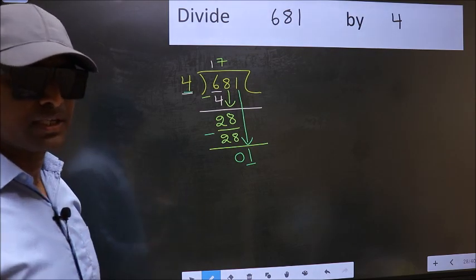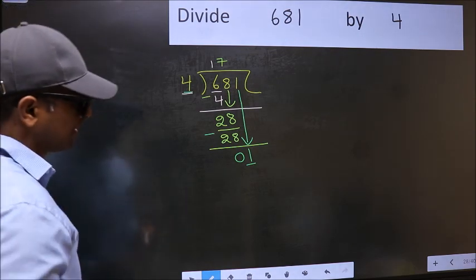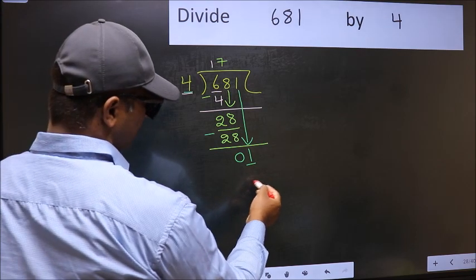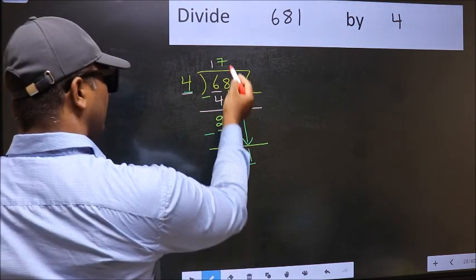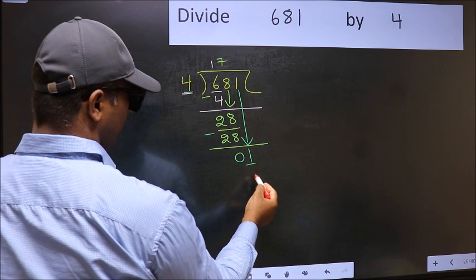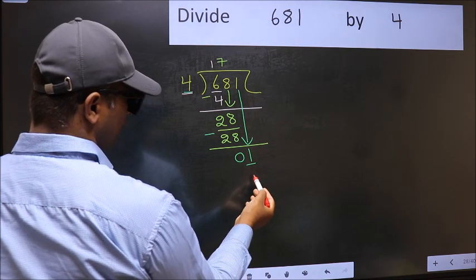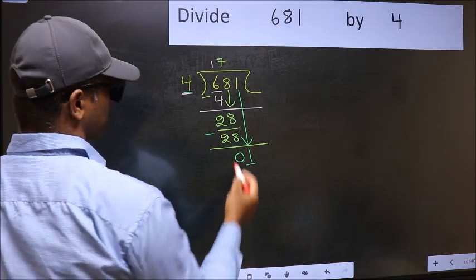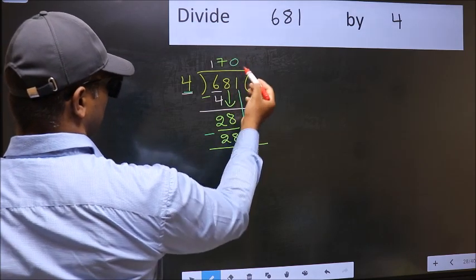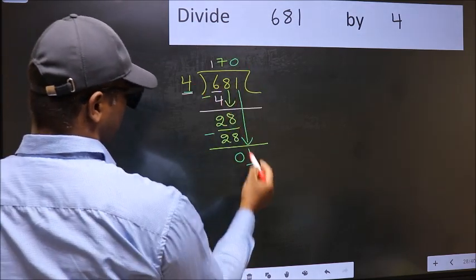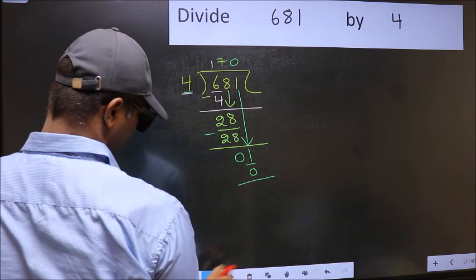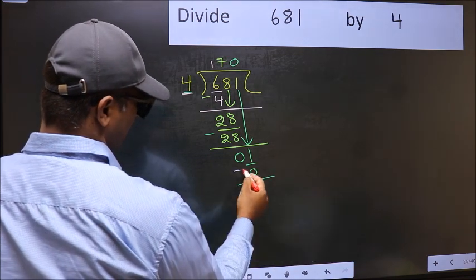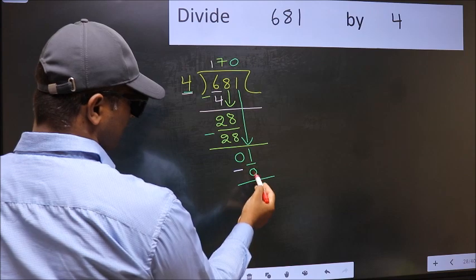Instead, what you should think of doing is, what number should we write here? If I take 1 here, I will get 4. But 4 is larger than 1. So what we should do is, we should take 0. So 4 into 0, 0. Now you should subtract. 1 minus 0, 1.